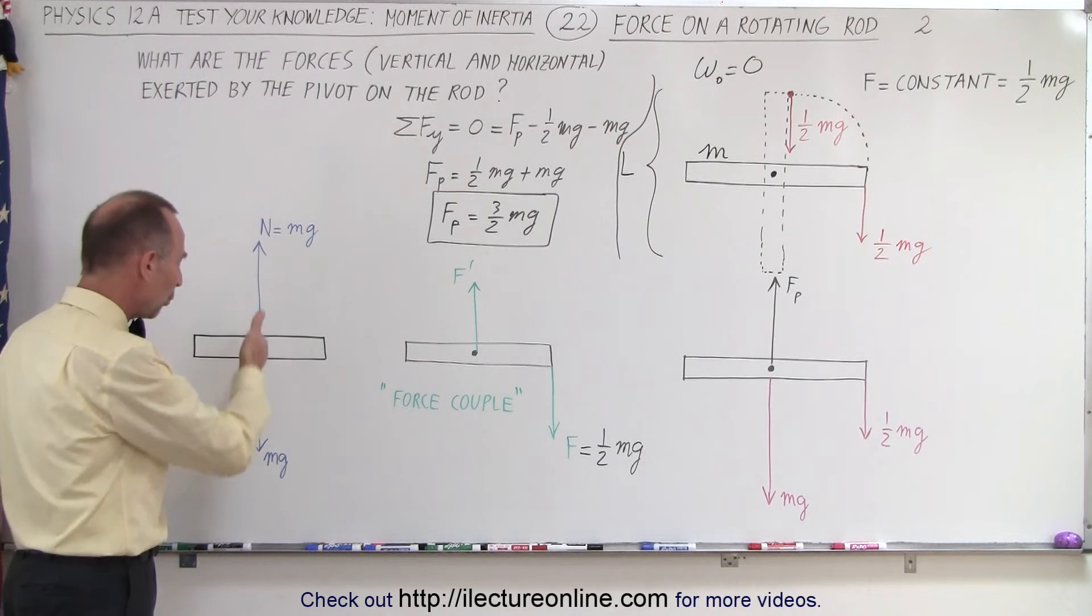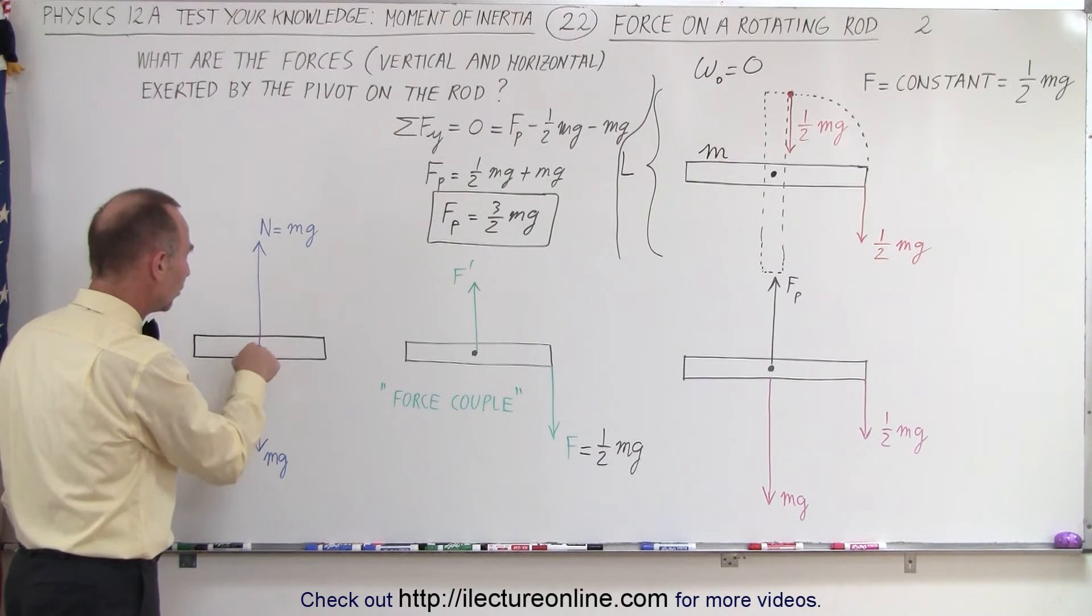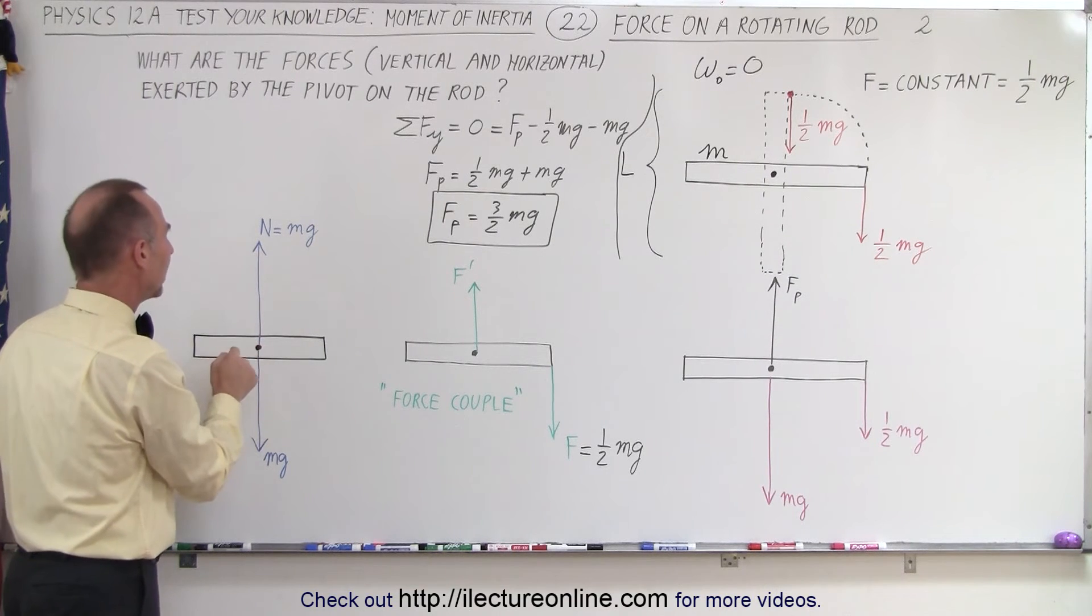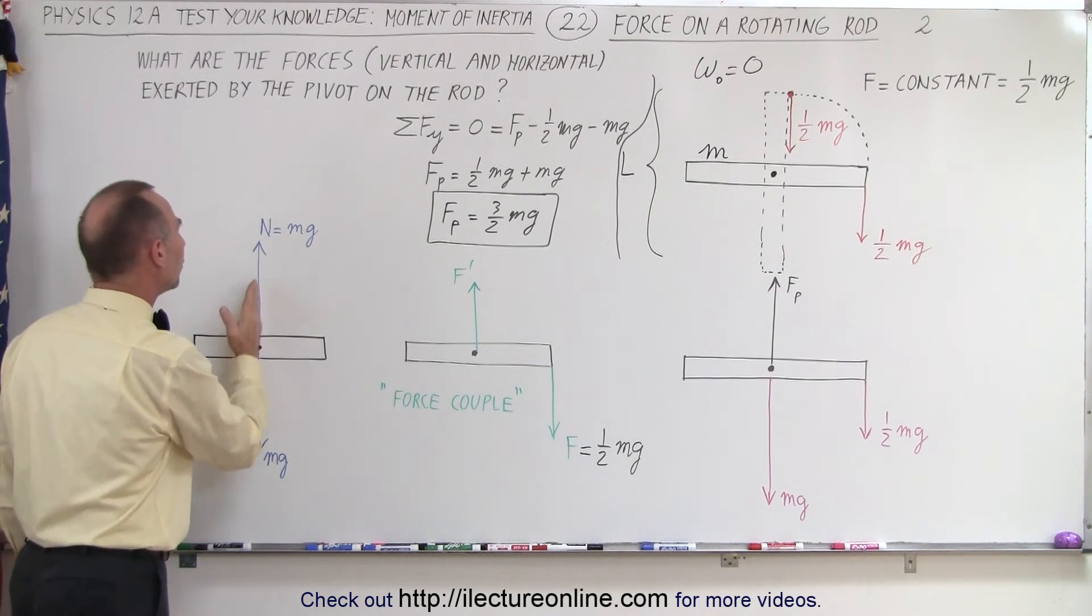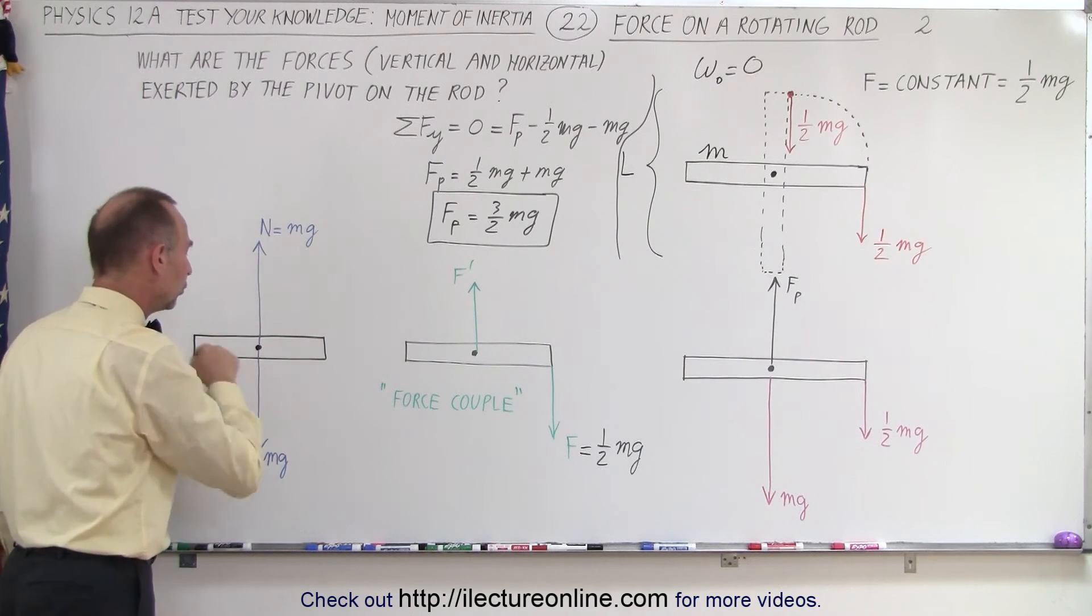In addition to this, we have the weight of the rod pulling down on the pin here, about which the beam or the rod is rotating. And so we have what we call a normal force pushing back, which then has to be equal to the weight of the force due to gravity.